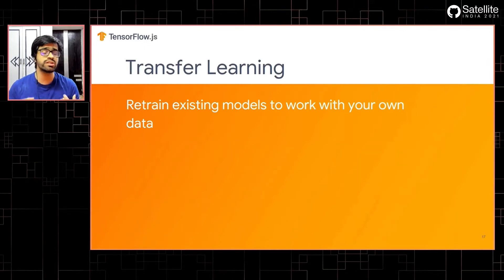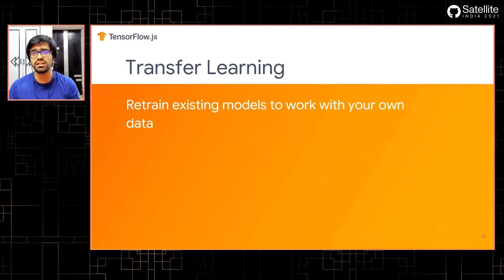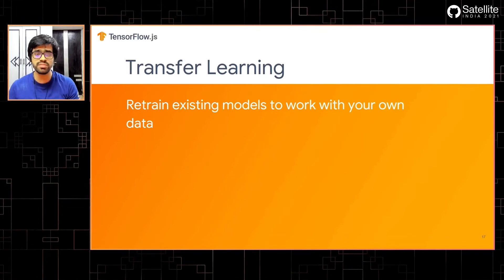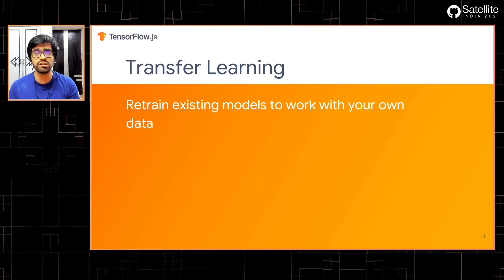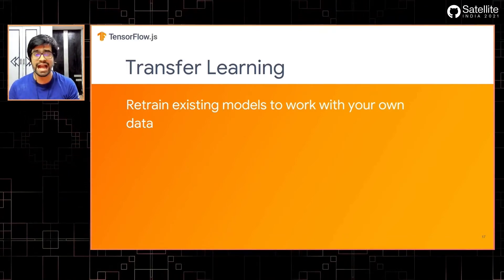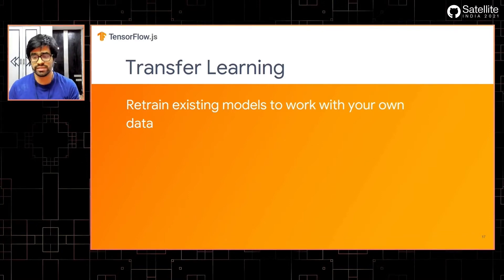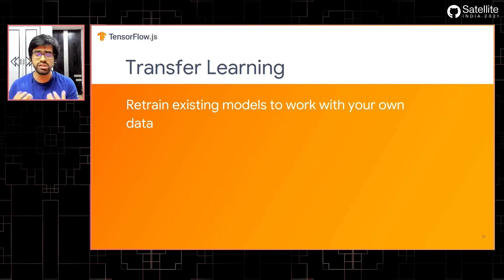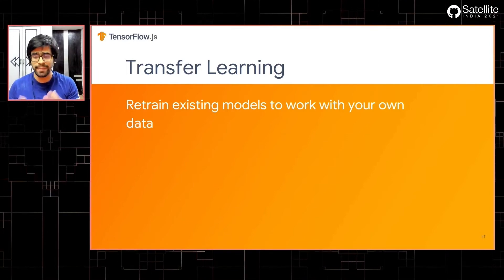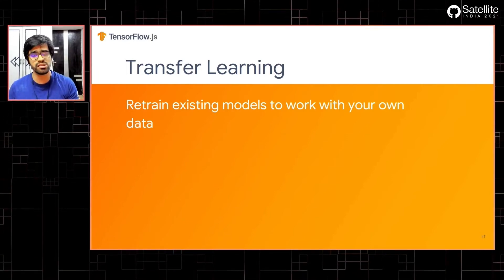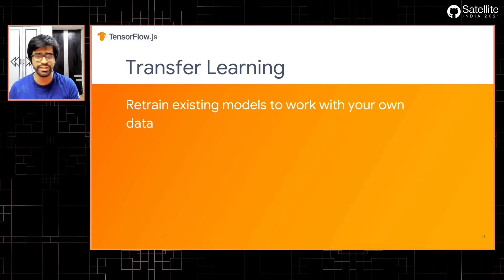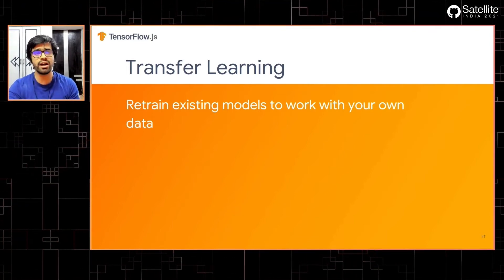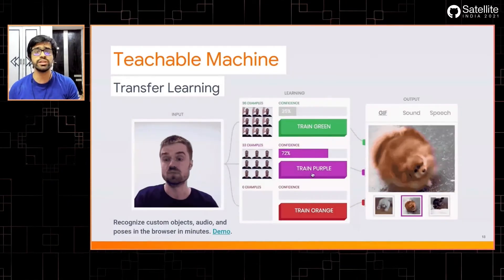The second part is using transfer learning — basically retraining existing models to work with your own data, customizing those models to your data to provide better accuracy and better functionality. Transfer learning is essentially taking an existing model and applying it to similar kinds of problems or a similar domain — for example, recognizing a cat instead of a dog. There are two different ways to use transfer learning.